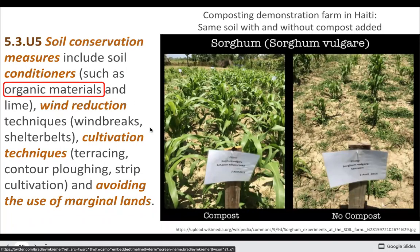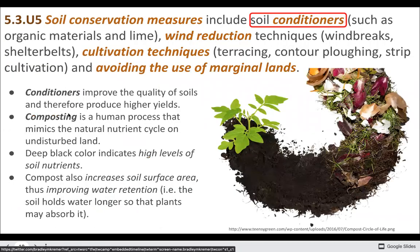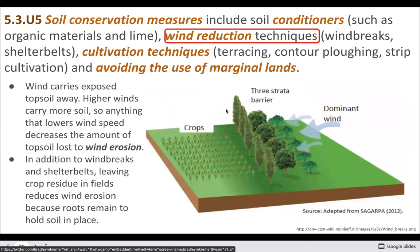We can improve soil by conditioning it — adding organic material to act as natural fertilizer. Here we have a compost versus a no-compost planting comparison. We do lots of composting on campus, and it's pretty amazing. You can also use non-compost fertilizers, and many of those are actually derived from fossil fuels — pretty wild to think about.